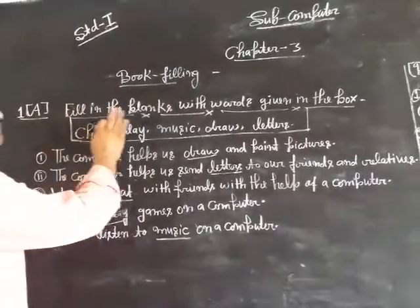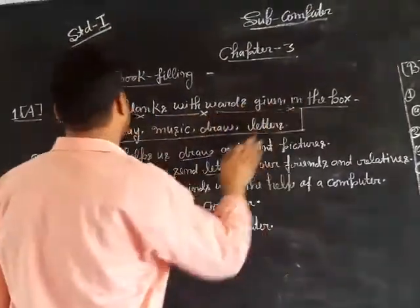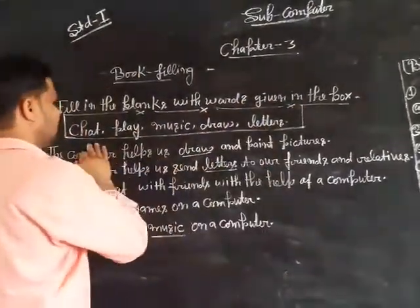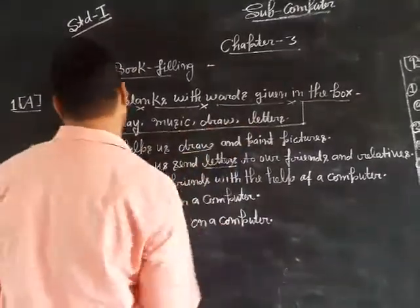Number one: I have a friend with a bird given in the box — chat, play, music, draft, or letters.